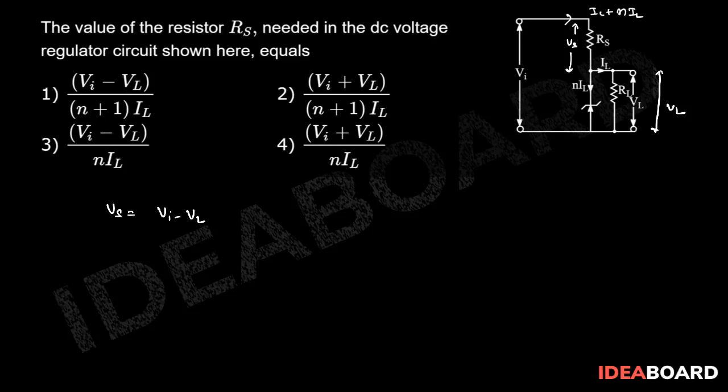Now VS can be written as (IL plus N times IL) into RS using Ohm's law, V equals IR, that is equal to VI minus VL. So RS value equals (VI minus VL) divided by (IL plus N times IL).